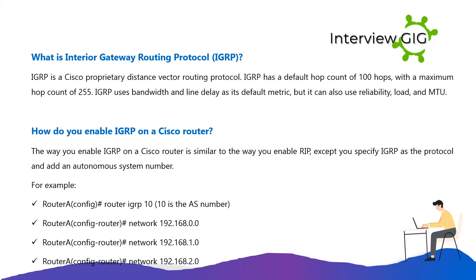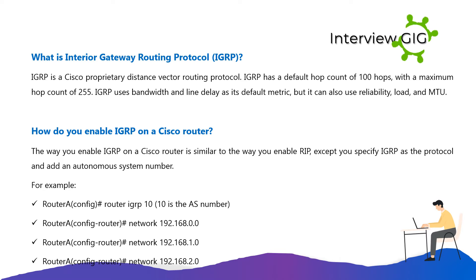Enabling IGRP on a Cisco router is similar to enabling RIP, except you specify IGRP as the protocol and add an autonomous system number. For example: router(config)# router igrp 10 — where 10 is the AS number — then: network 192.168.0.0, network 192.168.1.0, network 192.168.2.0.